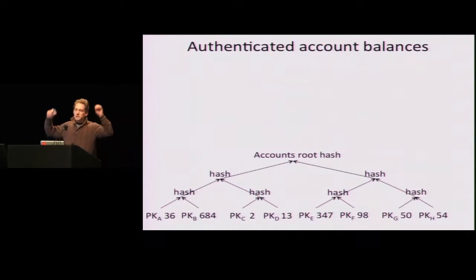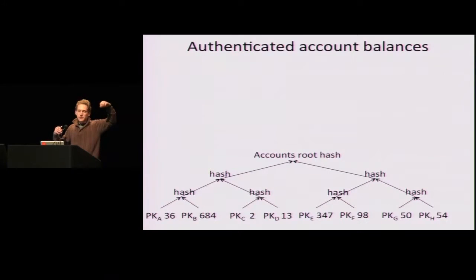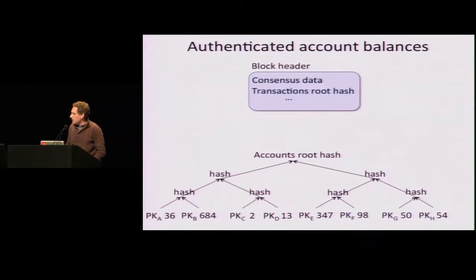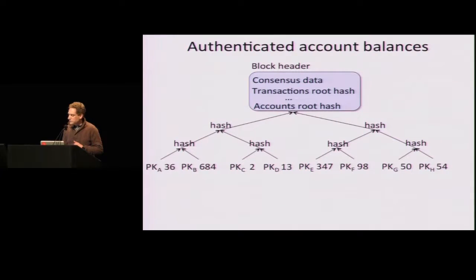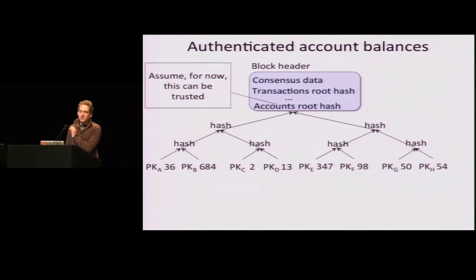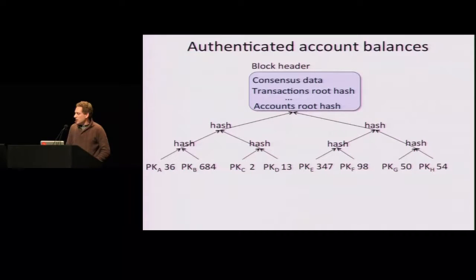We put alphabetically all the public keys at the bottom of a tree, and hash things pairwise up to the root. That's called a Merkle tree. The very root hash is the Merkle root, and we put that Merkle root into the block header. For now, assume that this Merkle root can be trusted — I will explain later why it can be trusted. Assume it's a true indication of who has how much money.